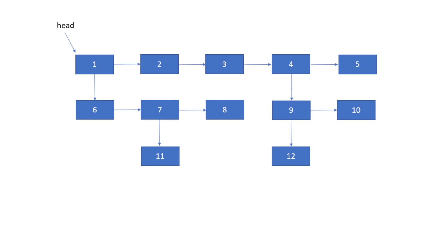Welcome to Coding Simplified. We'll see how we can flatten a multi-level linked list. Multi-level means each node has a next pointer as well as a child pointer. Starting from the head node, one pointer points to the next node and another points to the next level. So we have three levels, and each node can have a next pointer or a child pointer.